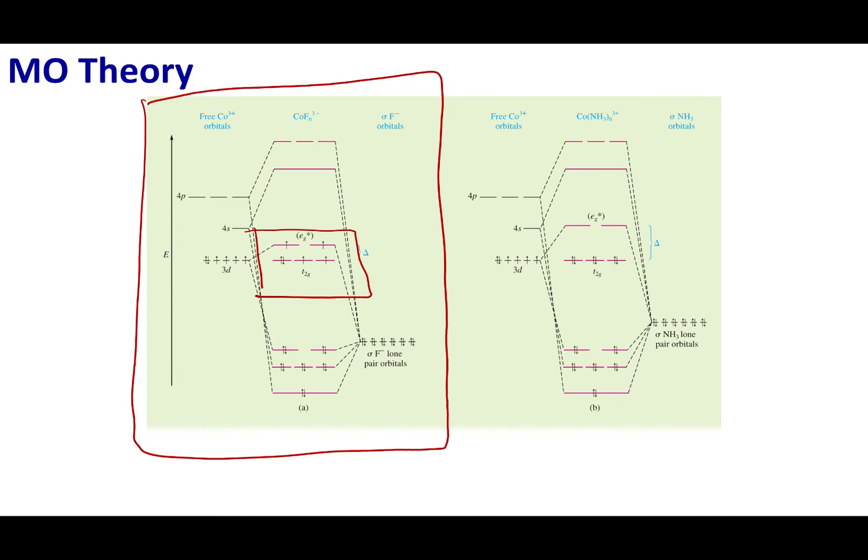If I wanted to go ahead and detail this picture a little bit more, those two orbitals up on top have a high amount of character of dz² and dx²-y². In other words, the dz² and the dx²-y² is on top. The three on the bottom correspond to dxz, dxy, and dyz.